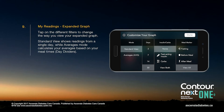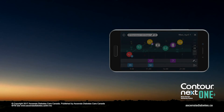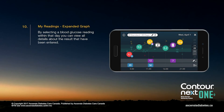Standard view shows readings from a single day, while averages mode calculates your averages based on your meal times. By selecting the blood glucose reading within that day, you can view all details about the results that have been entered.